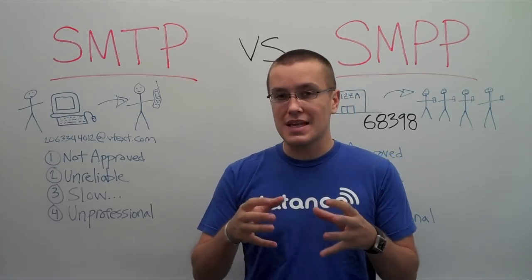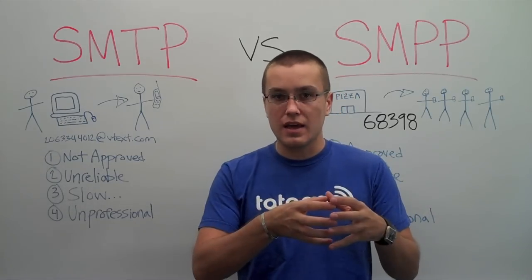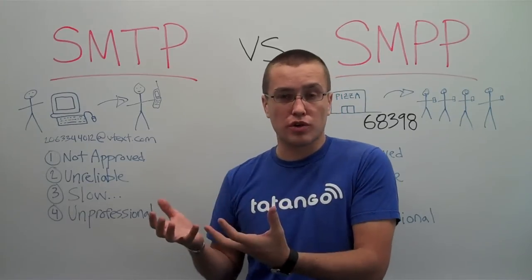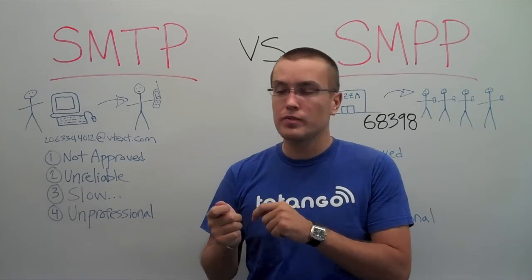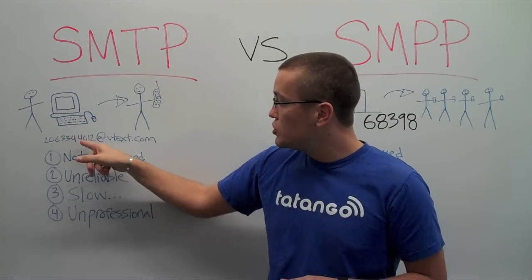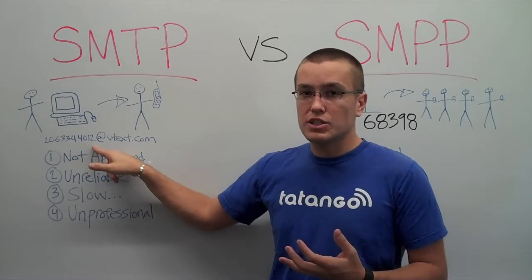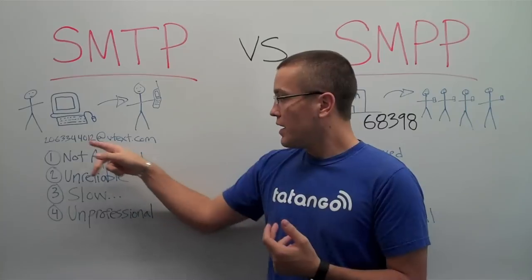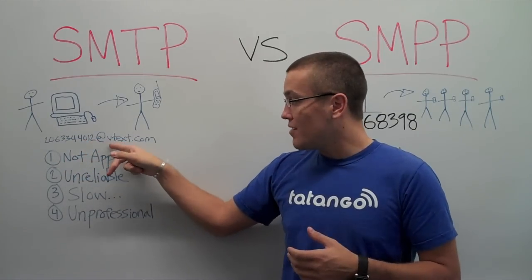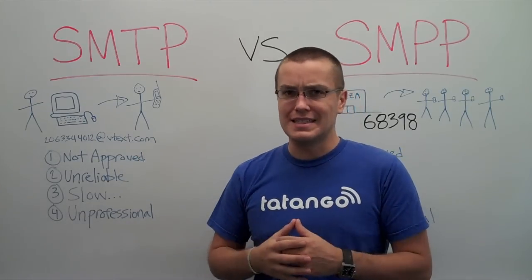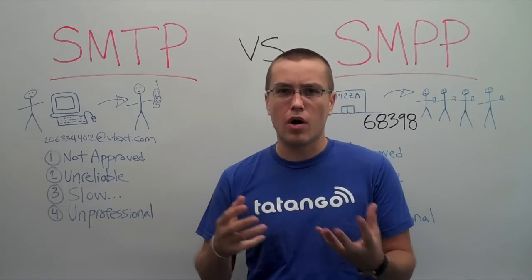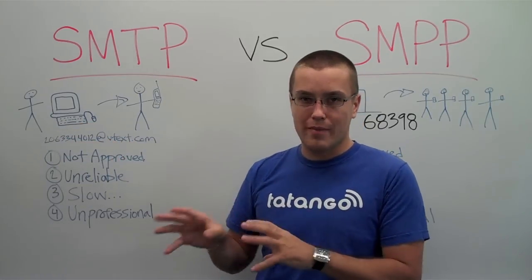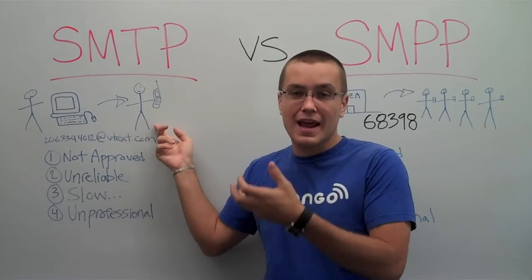SMTP would allow people to send an email from an email client — like Gmail — and send it to a person's mobile phone. Even if they didn't have an email app and just had a dumb phone or feature phone with text messaging, they could still receive that email. So someone would sit at their desk, type an email, and put the person's mobile phone number they were trying to reach, then append the carrier domain — like 206-334-4012 at vtext.com for Verizon, or att.com for AT&T. They're confusing and they change all the time. You'd type it in the To field, add subject and message, send it, and that person on their feature phone would get it as a text message.